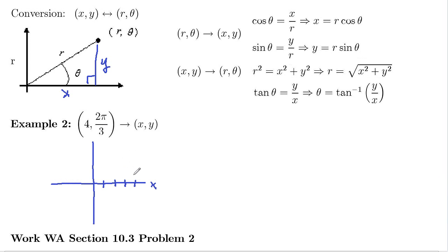And then we're going to go 2π over 3 counterclockwise. So that's going to land us over here. So we want to know Cartesian coordinates there. So x is going to be negative, y is going to be positive.